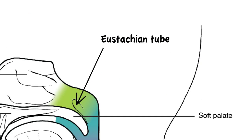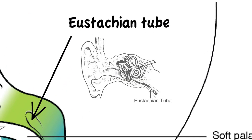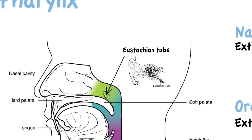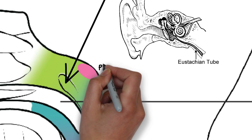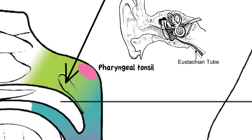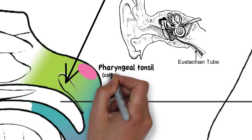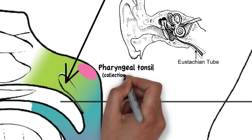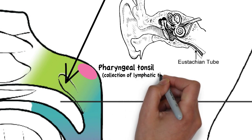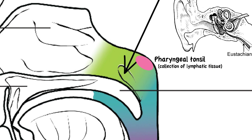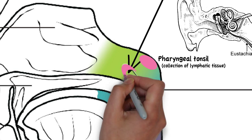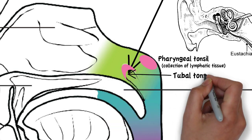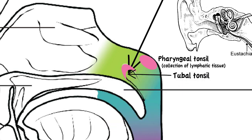The nasopharynx contains the Eustachian tube, which is a tube that connects to the middle ear. At the back of the nasopharynx, we have the pharyngeal tonsils, or adenoids. Tonsils are collections of lymphatic tissue. Around the opening of the Eustachian tube, we also have the tubal tonsils.